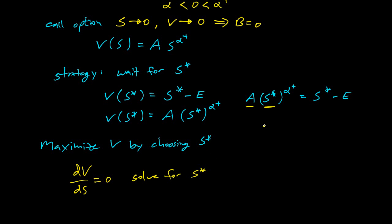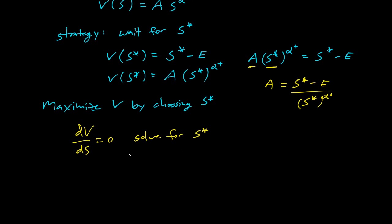And from up here, we can have a function of A. So A is S star minus E over S star to the alpha plus. So we can write A in terms of S star. And here we have a big equation. We have one variable, S star, setting the derivative equal to zero. We can maximize V. And without working through all the details, because I'm lazy, what's the solution? So the solution is S star equals E over one minus one over alpha plus. So here is the optimal exercise price.